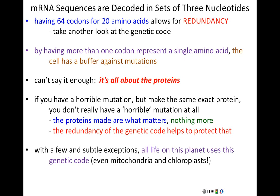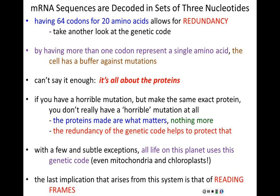Amazingly, the genetic code is universal. With very few and very subtle exceptions, all life on this planet — no matter how simple or complex — uses this genetic code. Even mitochondria and chloroplasts, which have their own genomes and their own transcription and translation machinery, use a genetic code that is nearly identical to the one we're discussing.